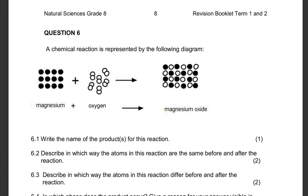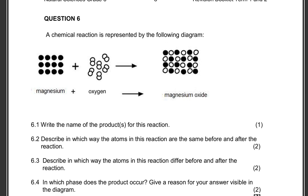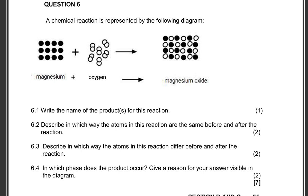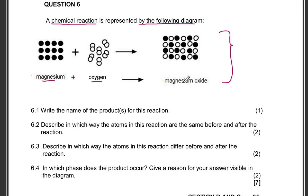Hello everyone, let us answer this question. This is question six from a revision booklet consisting of questions from previous question papers. A chemical reaction is represented by the following diagram — this diagram represents a chemical reaction showing a reaction between magnesium and oxygen to form magnesium oxide.